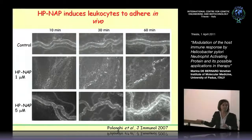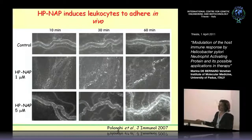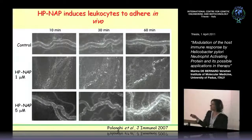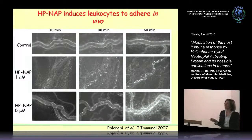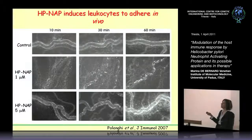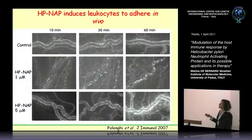We labeled leukocytes of rats with Acridine orange in order to follow them as fluorescent spots. Then we exposed mesenteric vessels and we applied topically H. pNAP. Already after 10 minutes, H. pNAP promotes the adhesion of leukocytes on the endothelium, and this is more visible after 30 minutes. When we increased the concentration to 5 micromolar, not only there was a clear adhesion, but after 16 minutes there was also a strong extravasation.